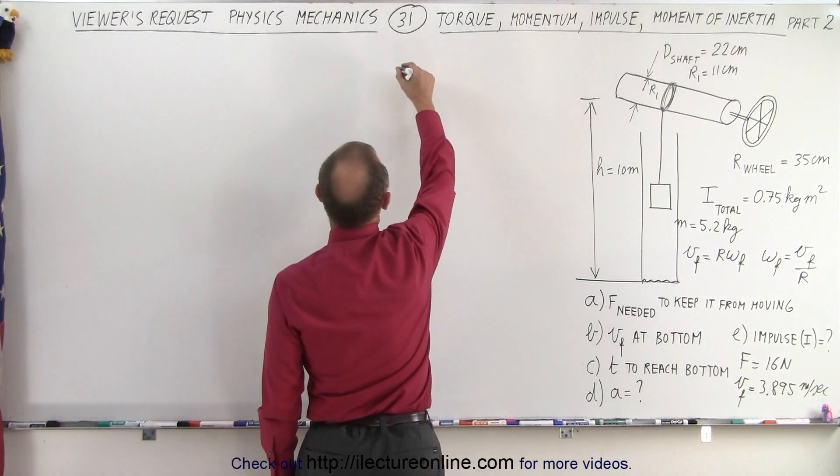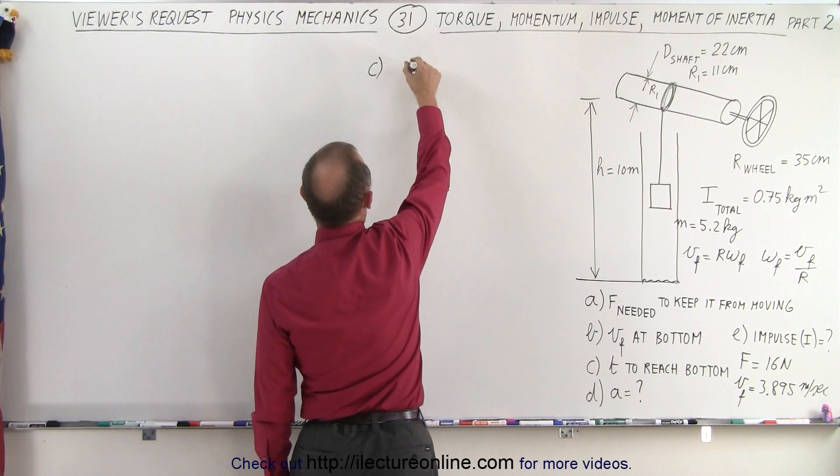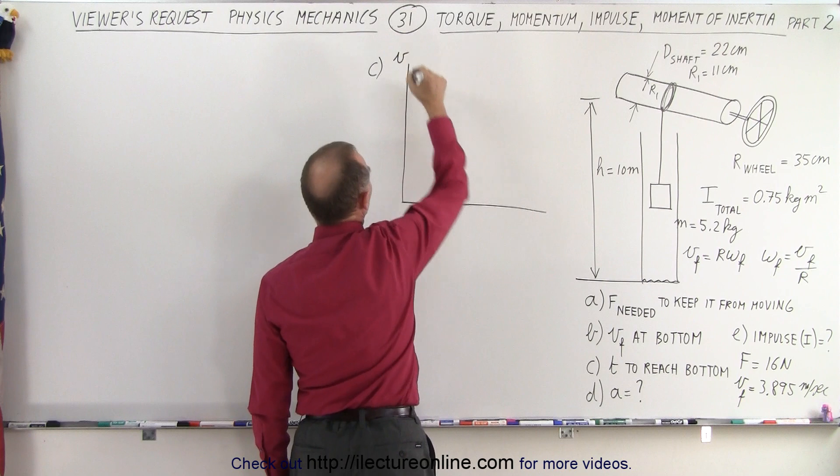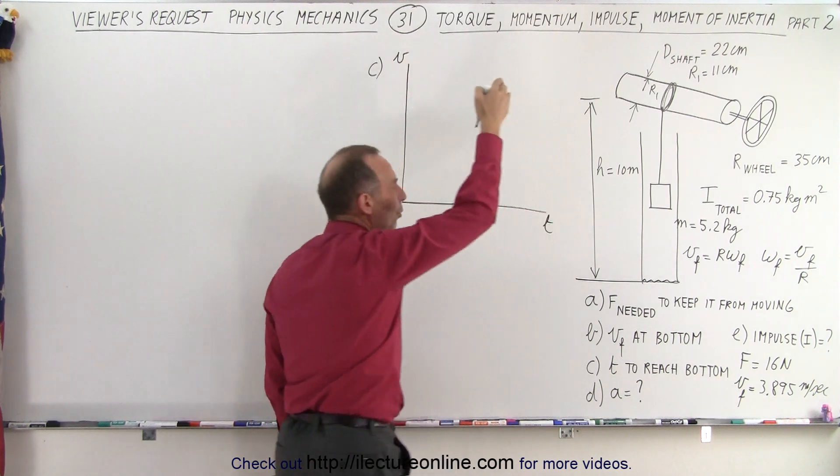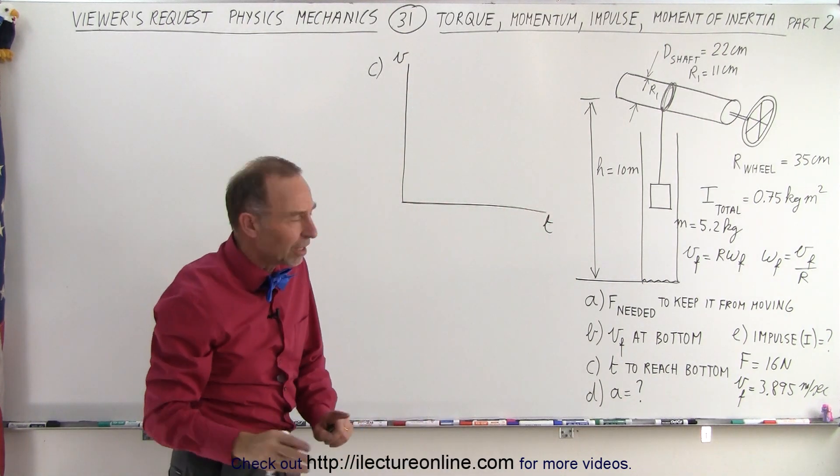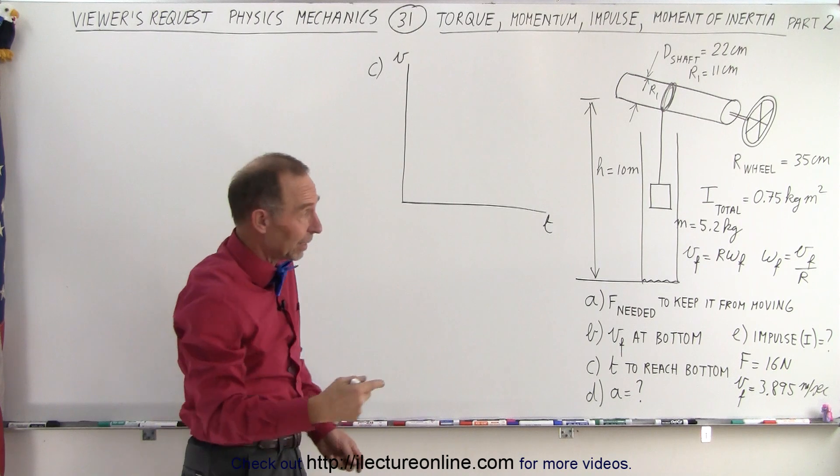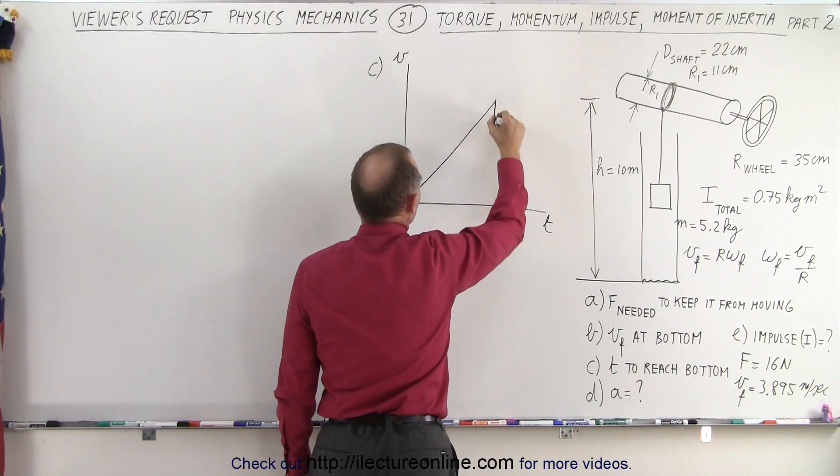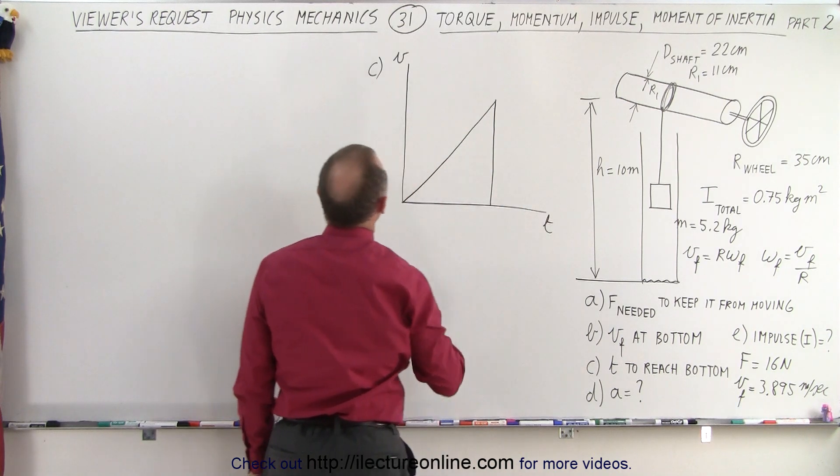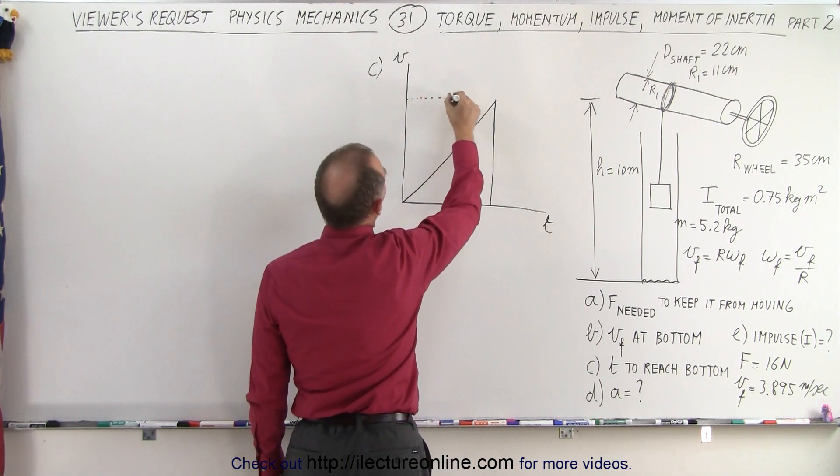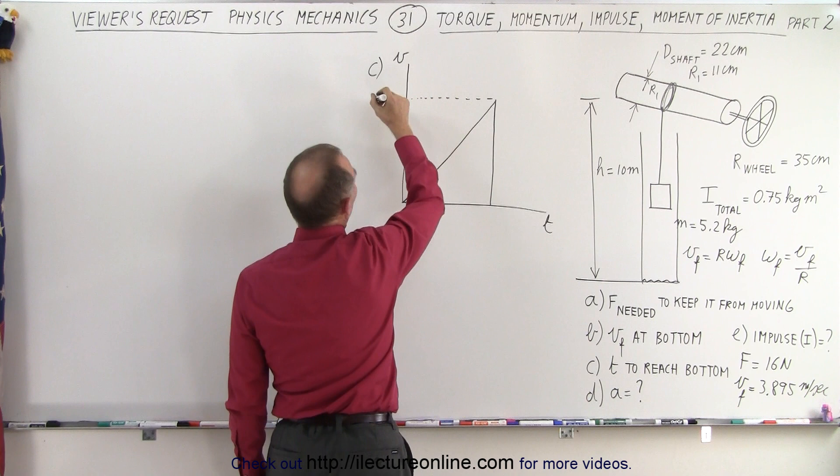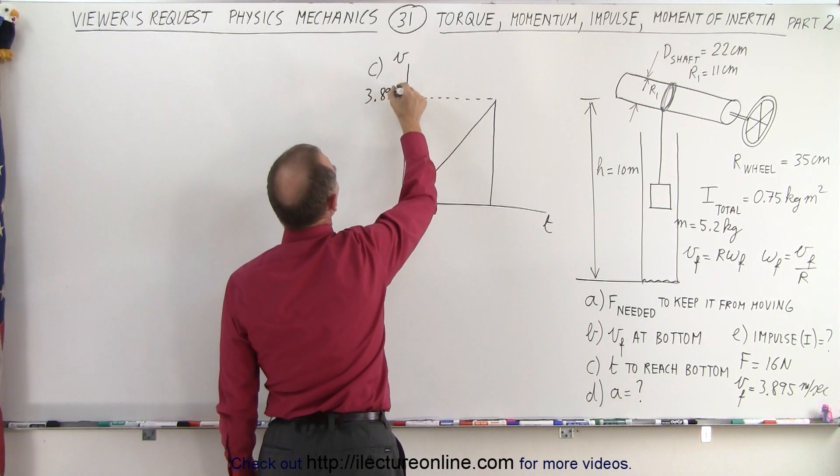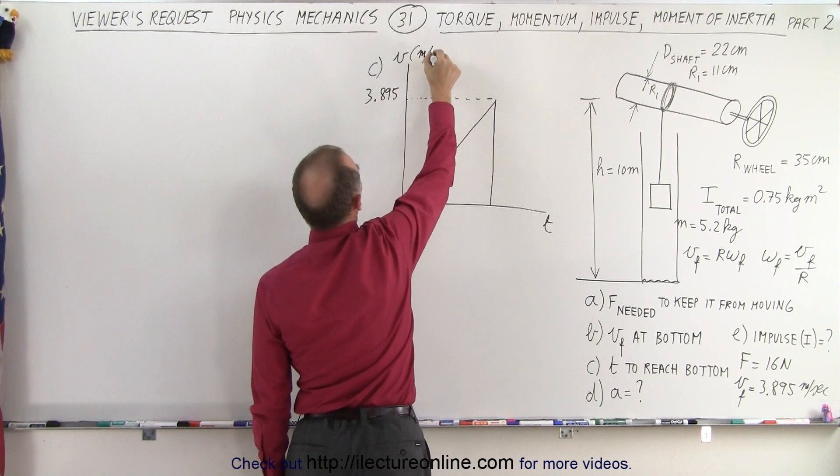So let's go ahead and for part C, we draw a velocity versus time graph. So there's velocity versus time. And even though we're going down, it's negative velocities, we can just simply turn it around and make it positive velocities. So our graph will look something like this.